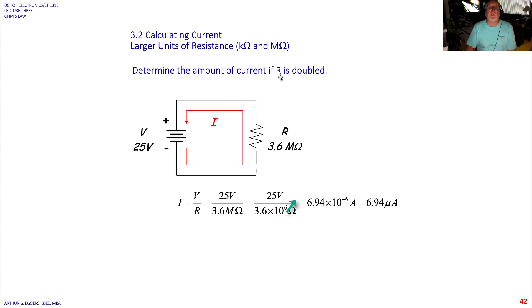Determine the amount of current if the resistor is doubled. So now we have 25 volts divided by 3.6 meg. Again, the same solution here. 3.6 into 25 gives me 6.94. We move the 10 to the sixth into the numerator. 10 to the minus sixth becomes 6.94 micro amps.